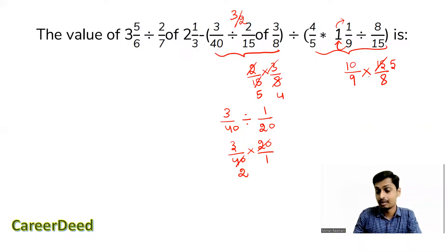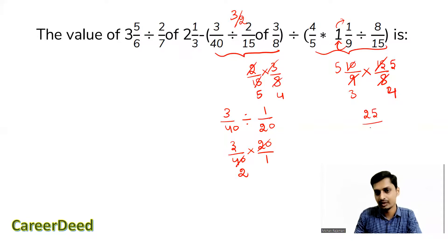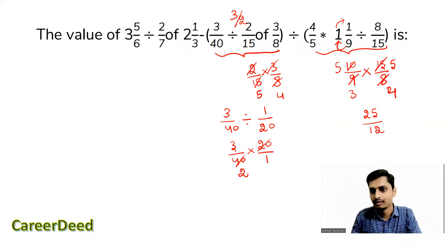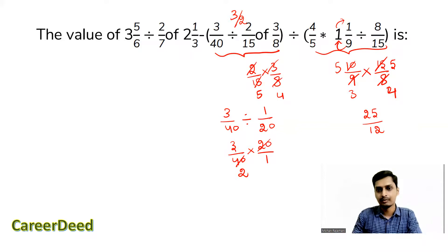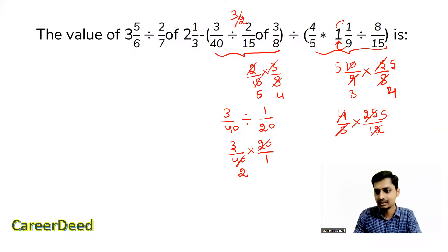Simplifying 10/9 × 15/8: 5 times in the numerator and 3 times, giving 25/12. And we have 4/5. So 4/5 × 25/12 — cancelling gives 5/3. So instead of the second bracket we have 5/3.